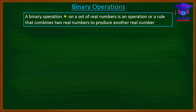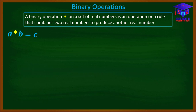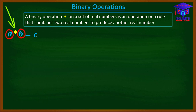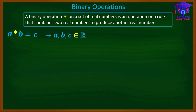What we are trying to say is that, assuming we have two real numbers, let's say A and B, we can combine these two real numbers with an operation, let's say star, to produce another real number, C. So the operation we use to combine these two real numbers, A and B, is what we call the binary operation. And A, B and C are all real numbers.